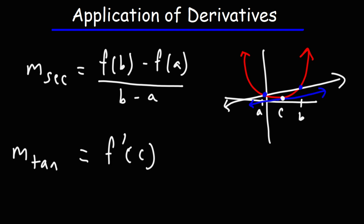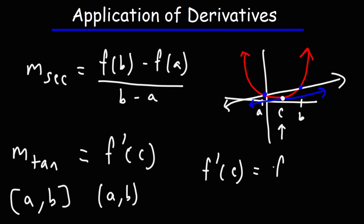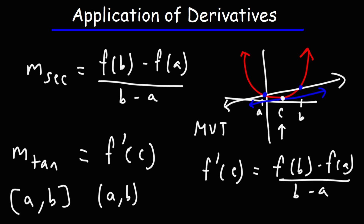Here's the basic definition for the mean value theorem. If F of X is continuous on the closed interval AB and differentiable on the open interval AB, then there is some number C in the interval AB such that F prime of C is equal to F of B minus F of A over B minus A. That's the basic idea behind the mean value theorem, which I'll abbreviate MVT.